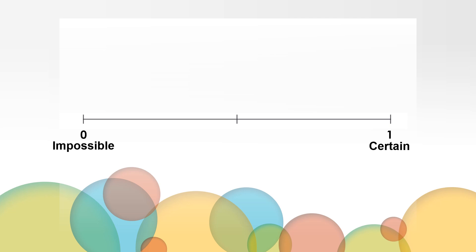Some events have an outcome that is equally likely. Events that are equally likely belong at the half mark on the number line.